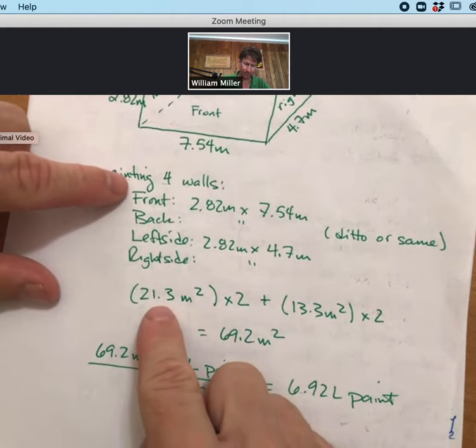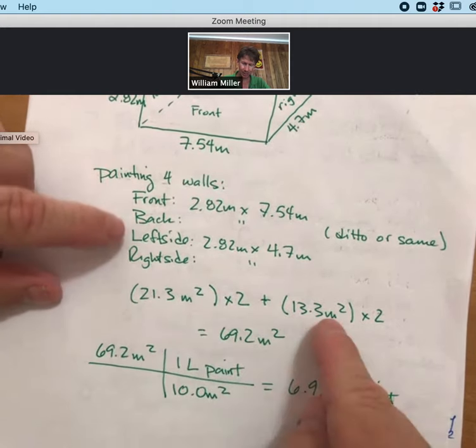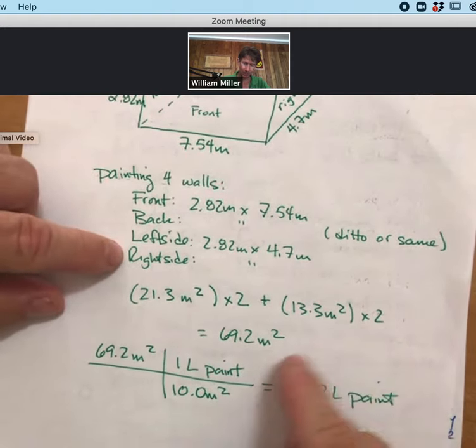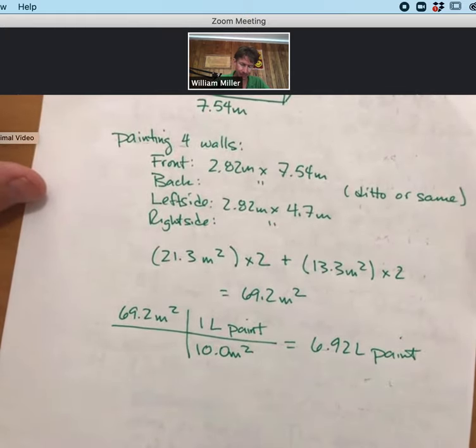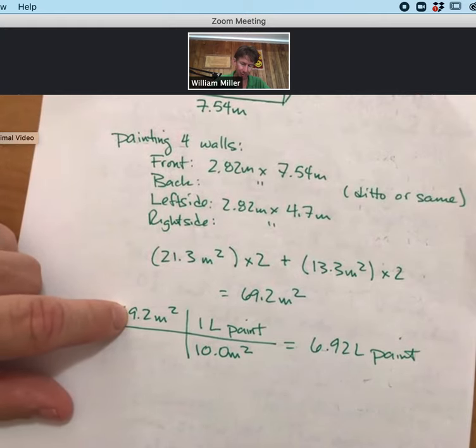Front times 2 for the back, left times 2 for the right. We get 69.2 meters squared, the total area for those four walls.